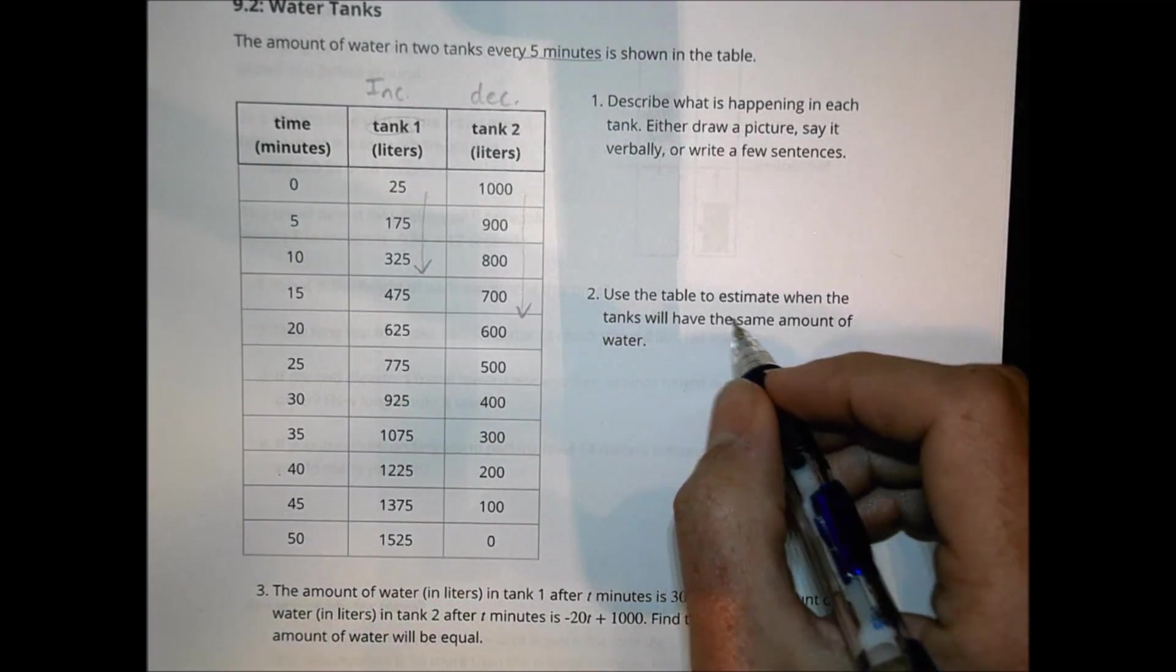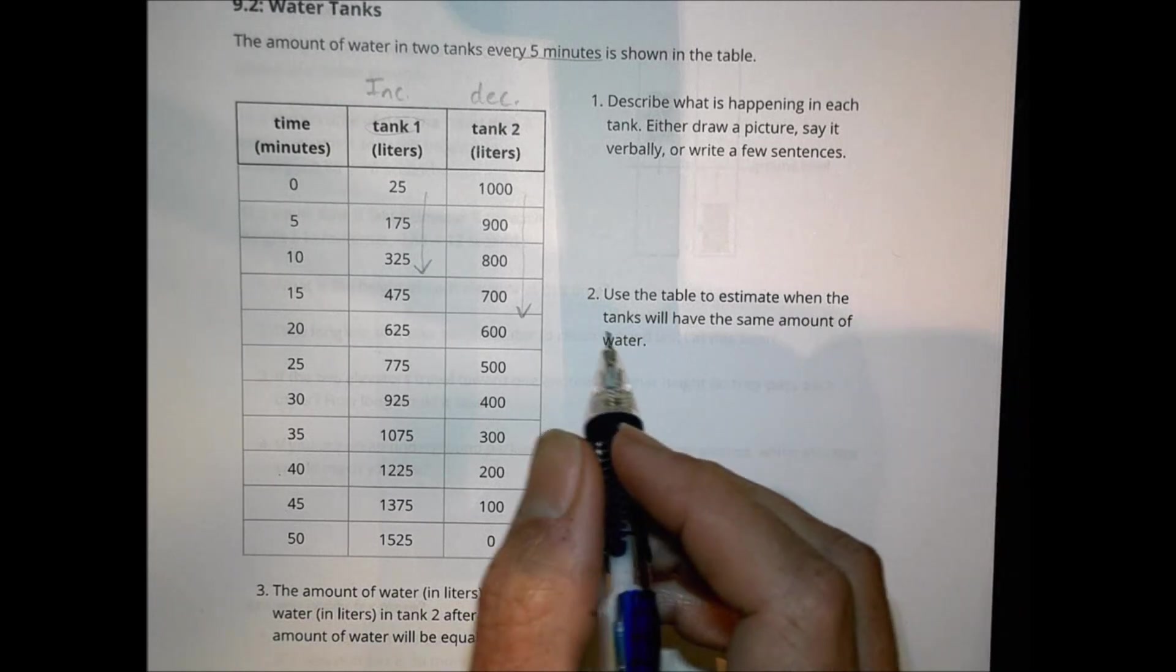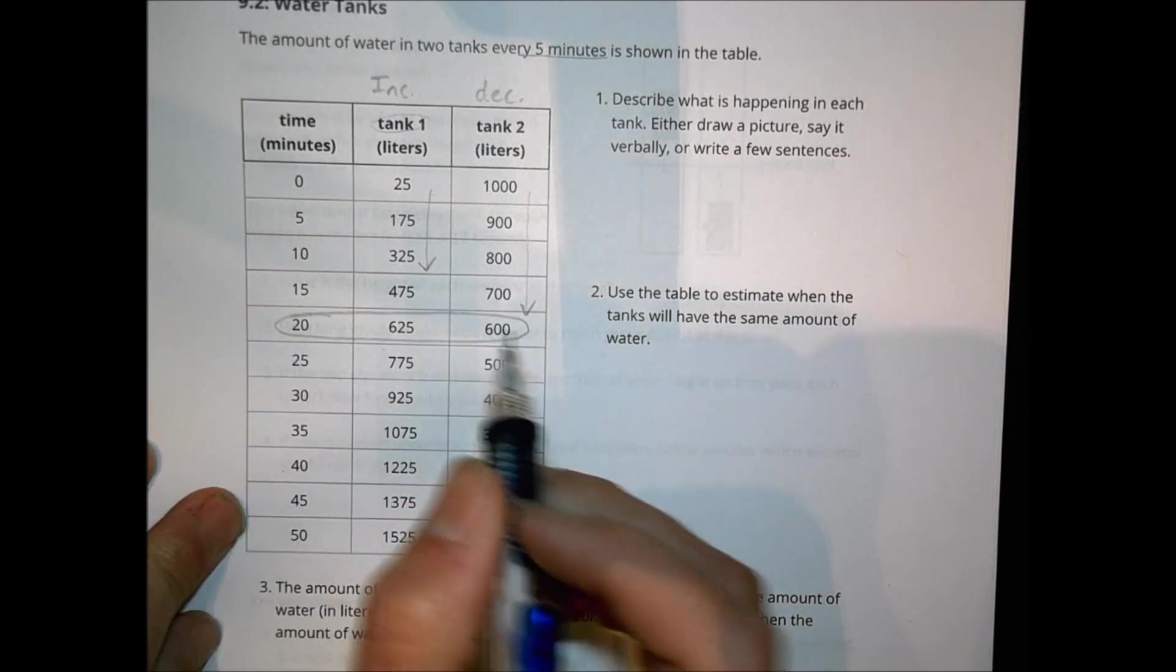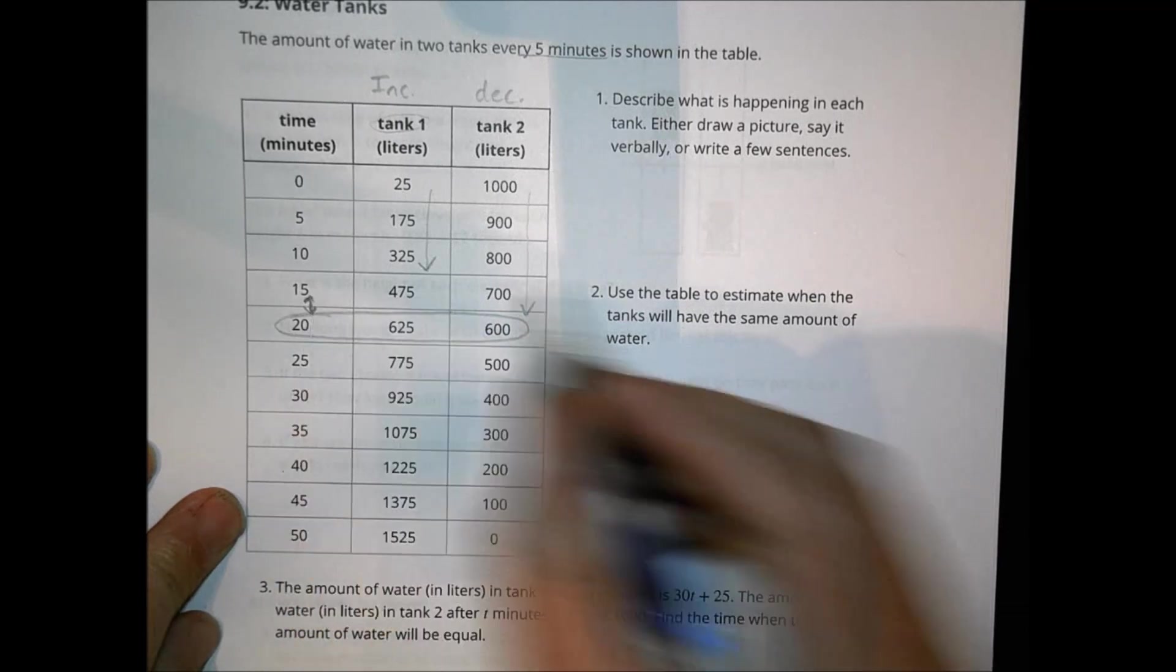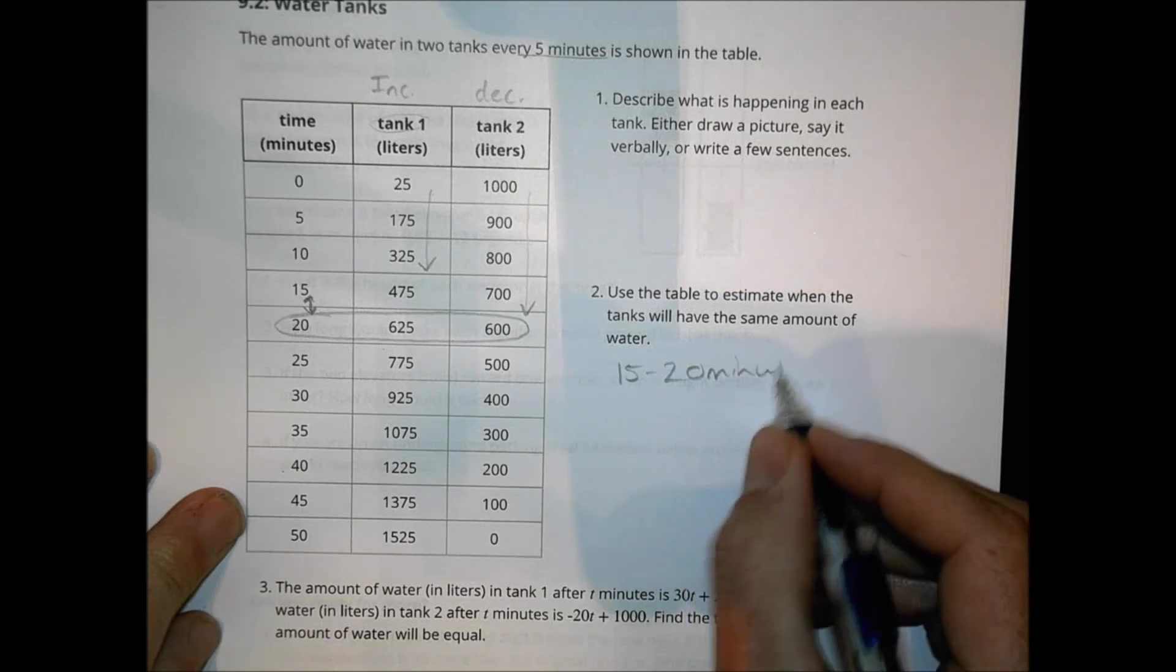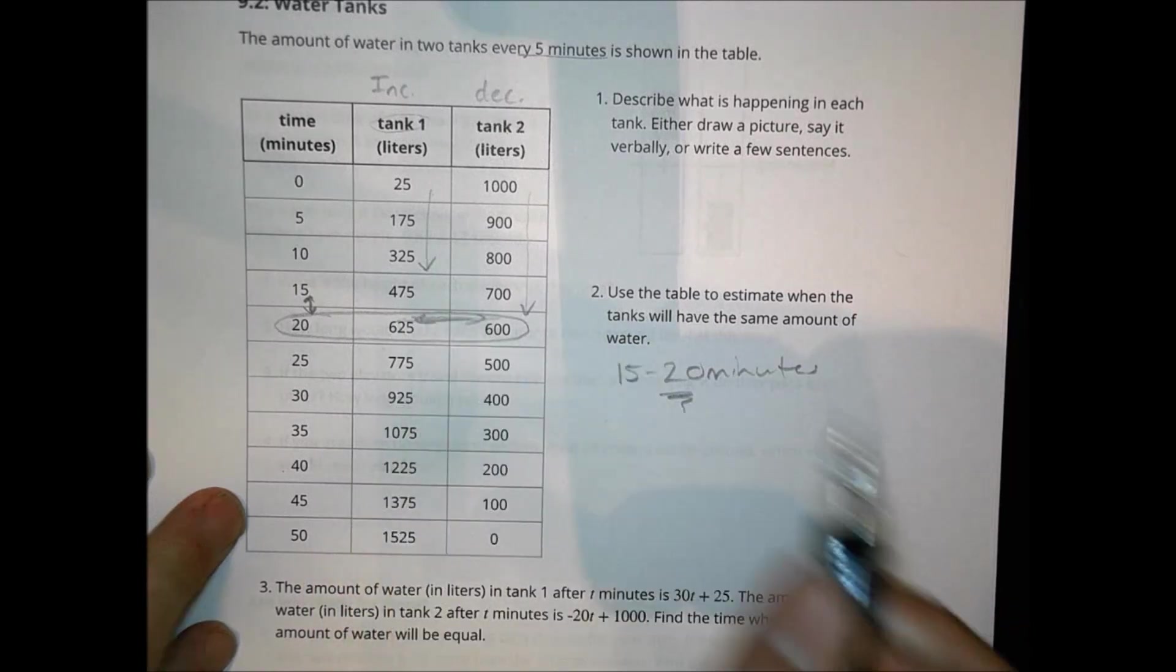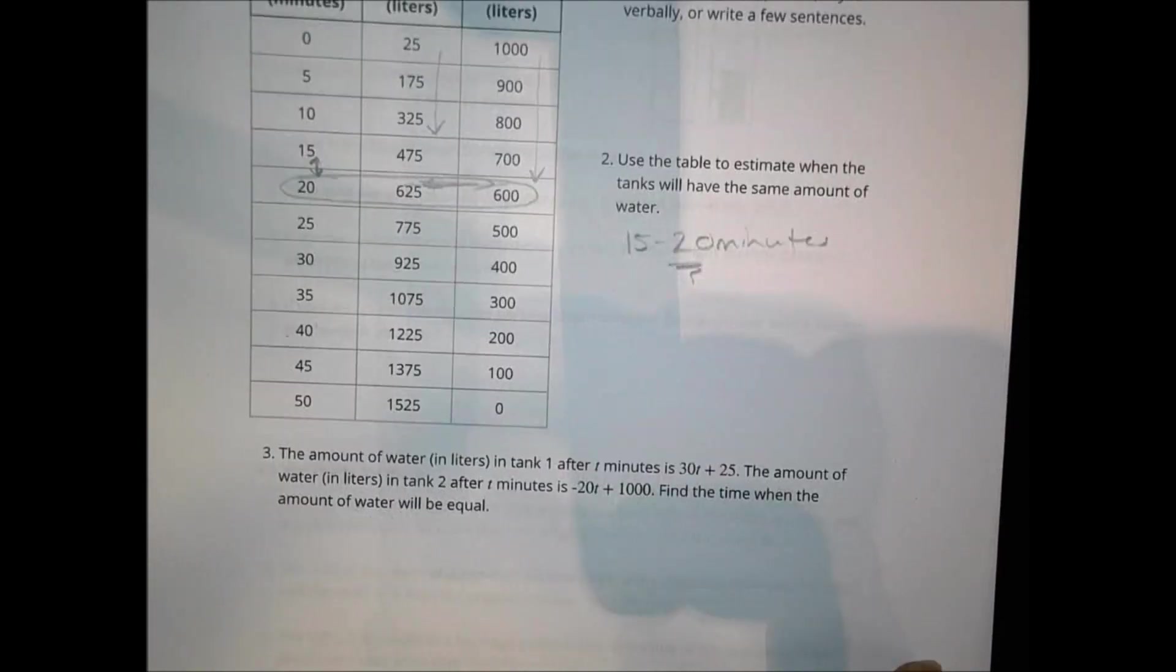Use the table to estimate when the tanks will have the same amount of water. We can see here at about 20 minutes, they're both in the 600 range right about there. So we would say probably somewhere between 15 and 20, they're going to be equal to each other. Somewhere between 15 and 20 minutes. Realistically, we're probably going to be closer to 20 than anything else because that's about where that's going to land, right about there.